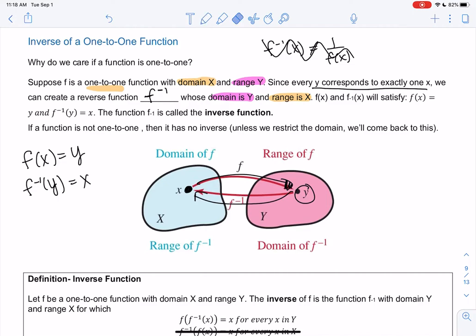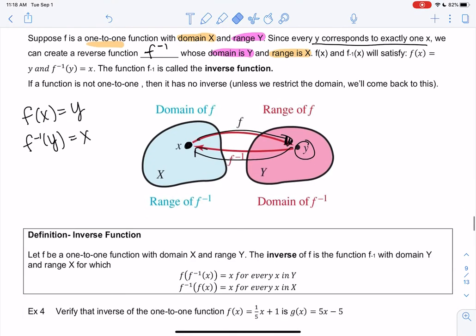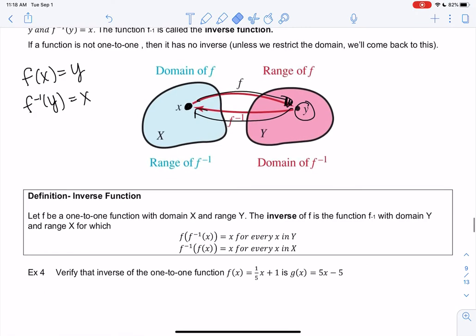Definition of an inverse function: If f is one-to-one with domain X and range Y, the inverse is just the opposite—it has a domain of Y and a range of X.